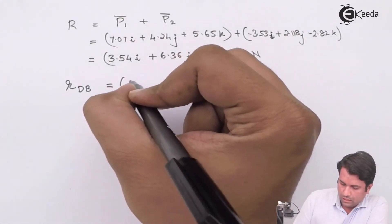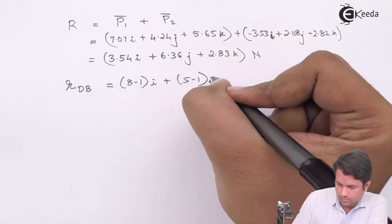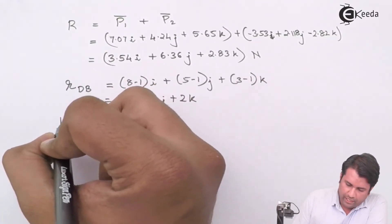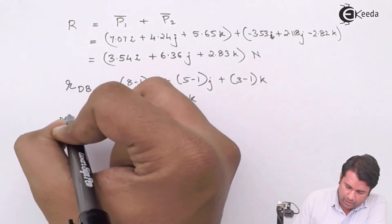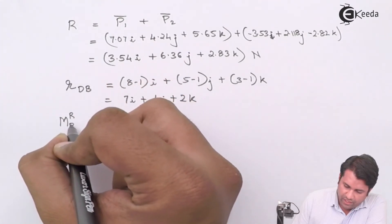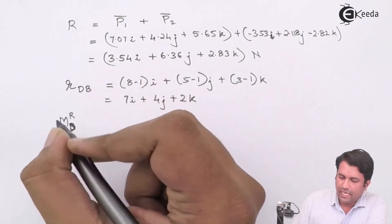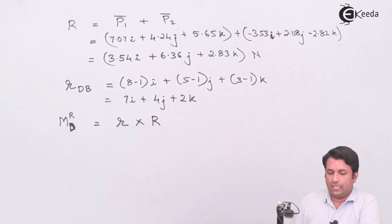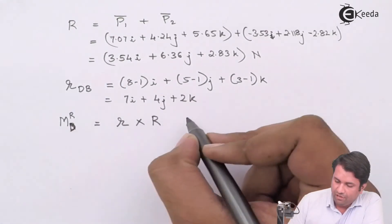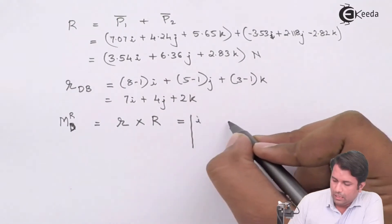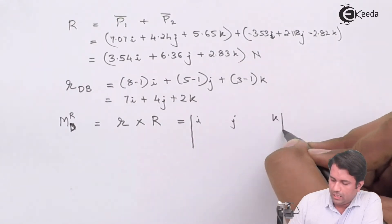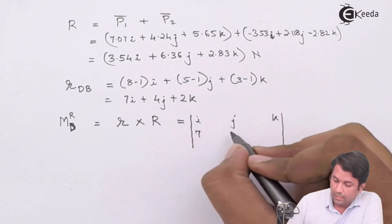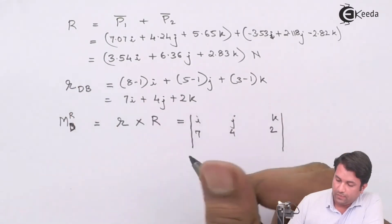To find the moment of the resultant with respect to point D, I take the cross product of the position vector and the resultant. This is computed as the determinant with unit vectors I, J, K. The position vector R has components (7, 4, 2), and the resultant force vector provides the remaining row values for the determinant.